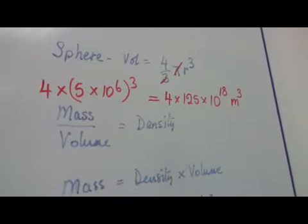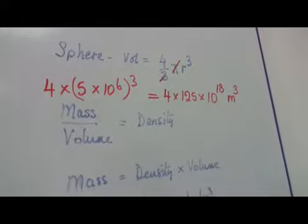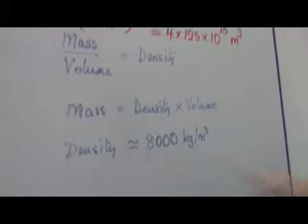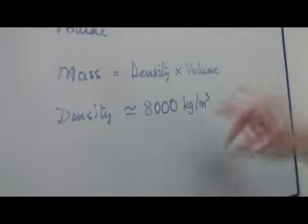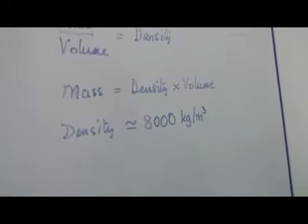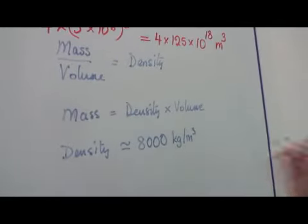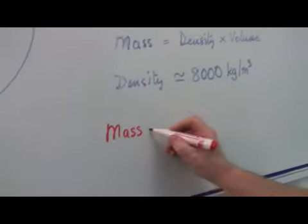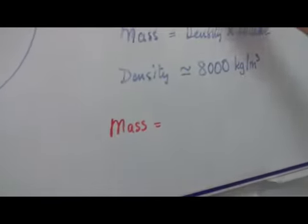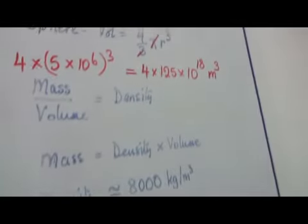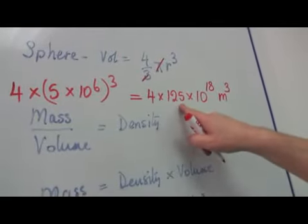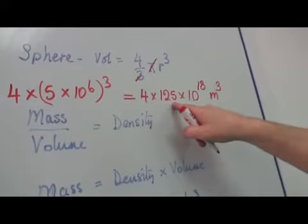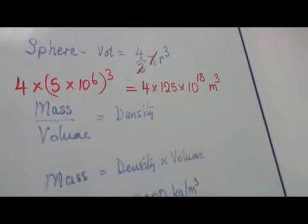Now, let's have a look at the density. We know that each of these is 8,000 kilograms. So the mass is therefore the volume, this that we've just worked out. Well, 4 times 125 is 500. That's nice and easy, isn't it.